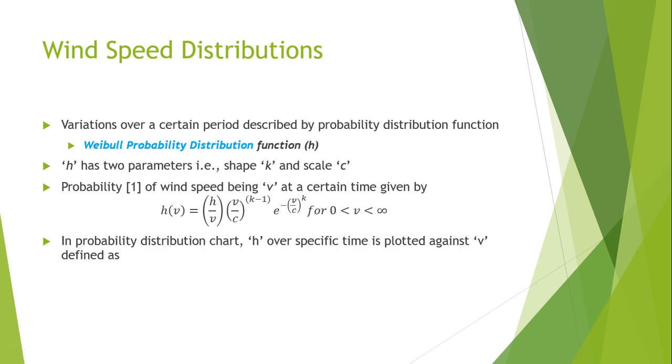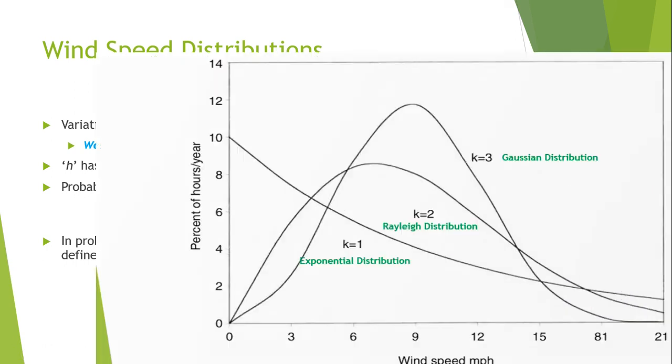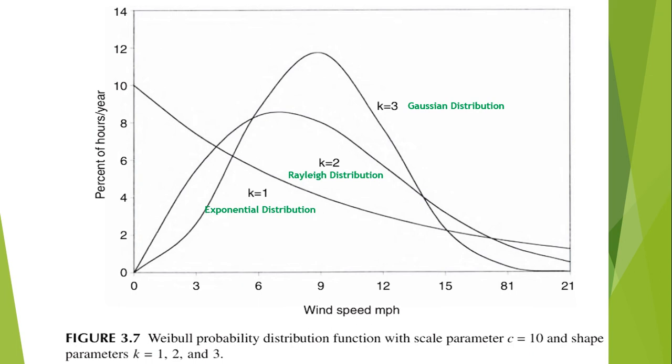In a probability distribution chart, h over a specific time is plotted against v and is defined by this formula, where h is equal to the fraction of time wind speed is between v and v plus delta v, where delta v is the small increment in v.